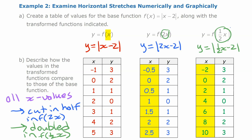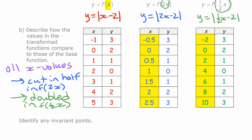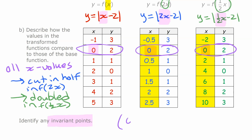Looking for invariant points in the horizontal case: only one point doesn't change in the table, and that's the point with an x value of 0. If x is 0, it doesn't matter whether you multiply by 2 or one-half — 0 times anything is still 0, so the y value remains the same. The only invariant point is (0, 2), where x equals 0.